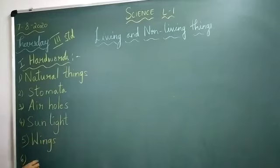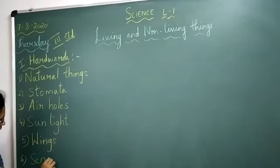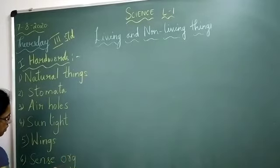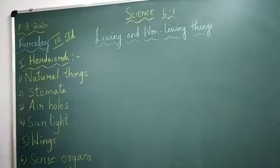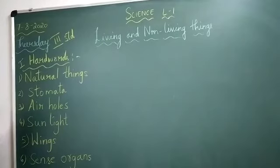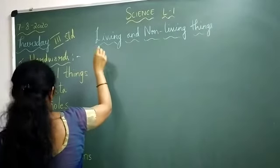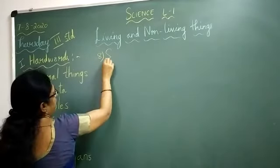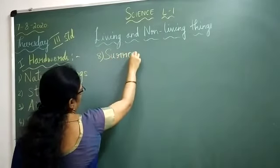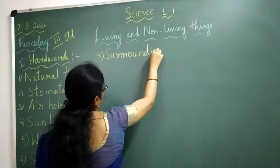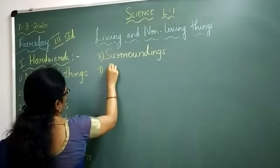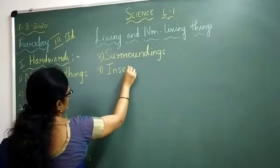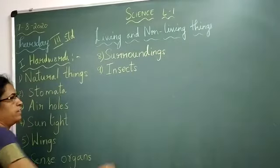Sixth one: sense organs. S-E-N-S-E, O-R-G-A-N-S, sense organs. Seventh one: shelter. S-H-E-L-T-E-R, shelter. Eighth one: surroundings. S-U-R-R-O-U-N-D-I-N-G-S, surroundings. Ninth one: insects. I-N-S-E-C-T-S, insects.